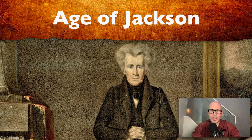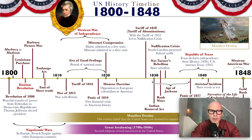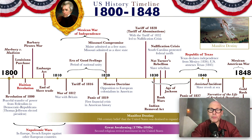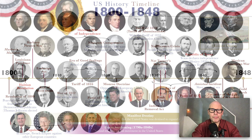We're going to talk about the Age of Jackson. Andrew Jackson was a very controversial character in the early to mid-1800s, and he's so memorable that they have an age or an era named after him. If you look on this timeline, from the late 1820s to the mid-1830s, it's called the Age of Jackson. Lots of events would happen, which is why he gets that name.